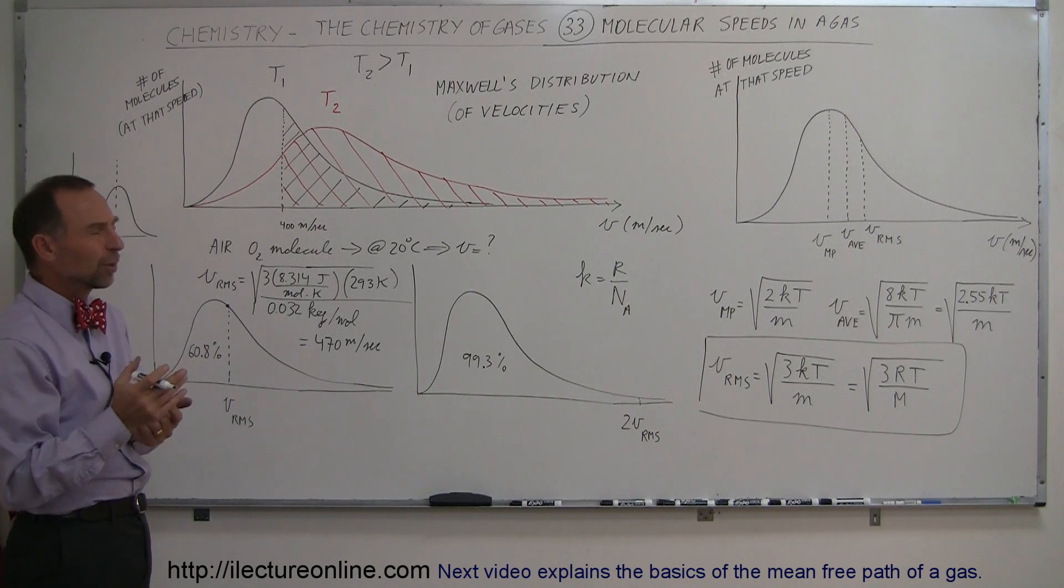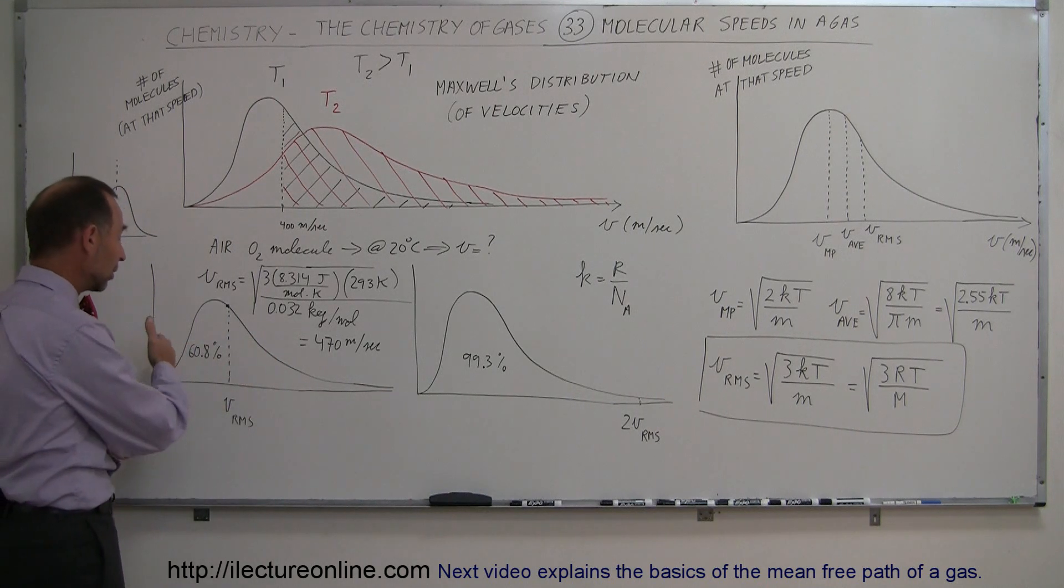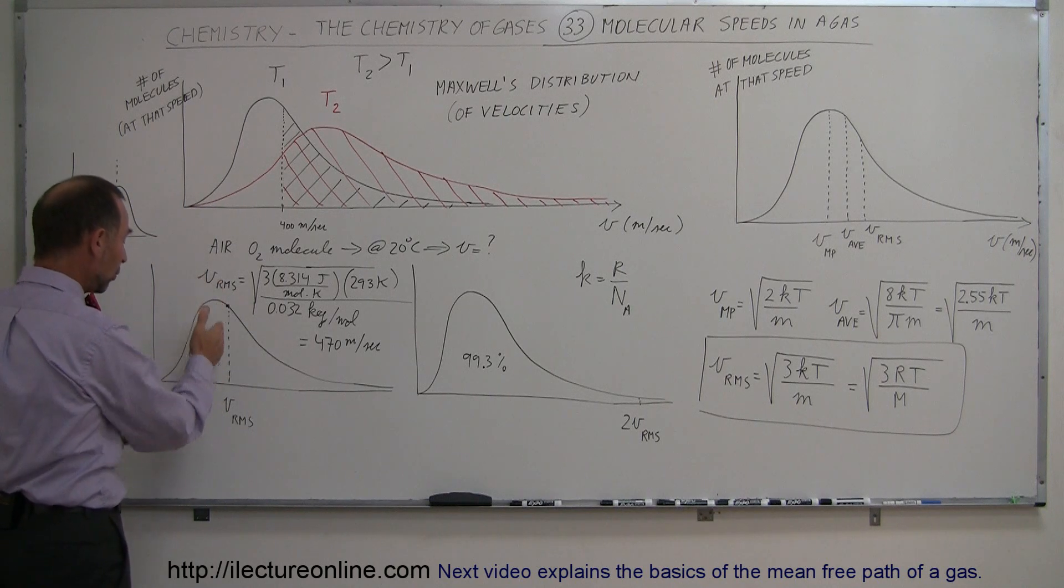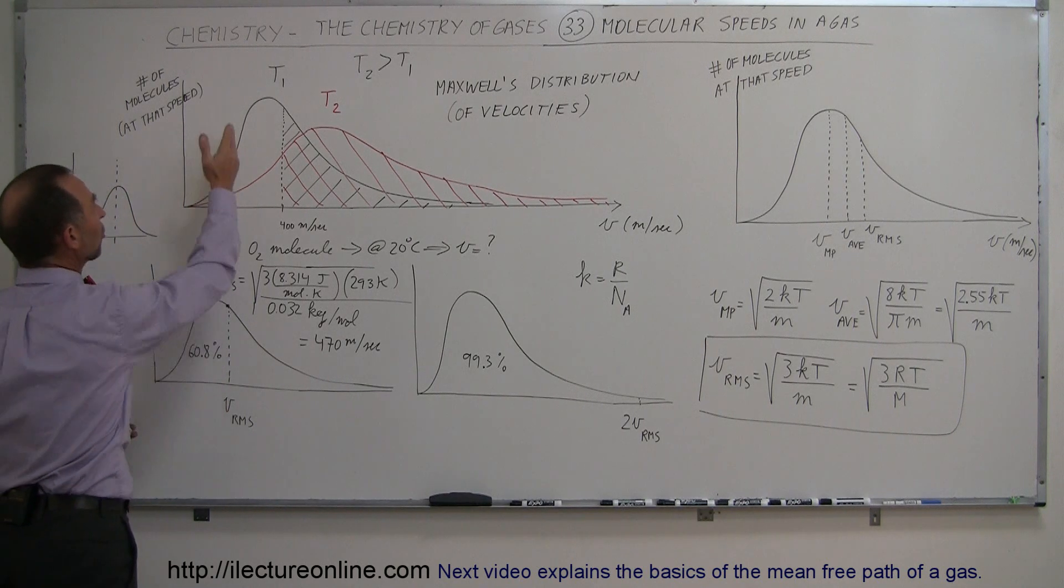What does that mean, root mean square again? Well, it's the representative velocity. If you want to look at it on the curve right here, the root mean square velocity is a little bit to the right of the top of the curve, the most probable velocity.